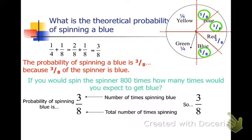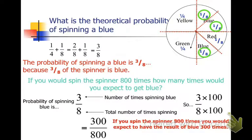Since we would multiply eight by 100, we would multiply three by 100 as well. And we would expect to land on blue 300 times if we spin the spinner 800 times.